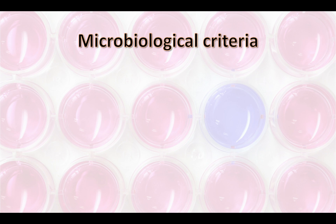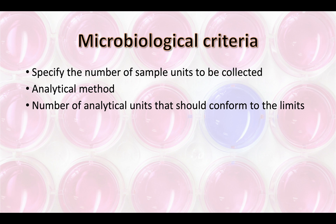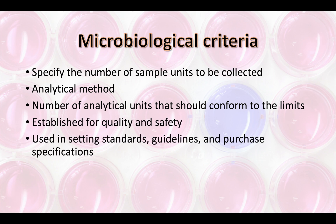When establishing your microbial criteria, you want to make sure to include the type of sample you are collecting — for example, an environmental swab or a specific number of grams of a product — and the number of samples you will be collecting. You would also include the location for environmental sampling. The analytical method must be included and needs to be a scientifically validated method. You, as a processor, must establish how many of your test results must fall within the limit you have set for the specific microbial test.